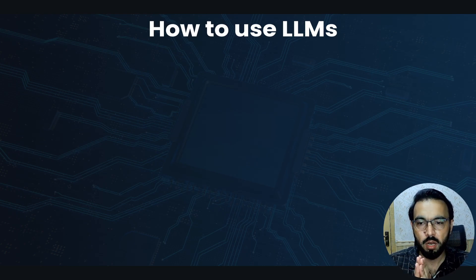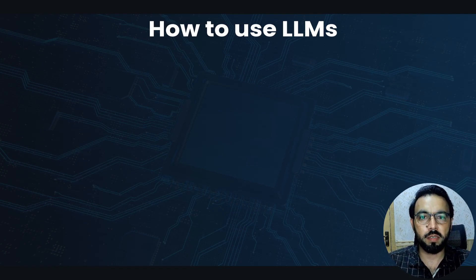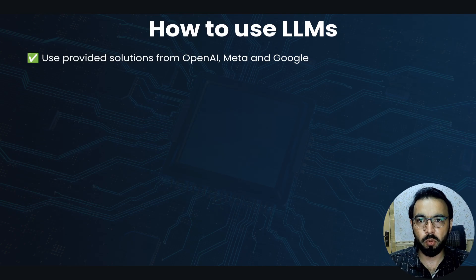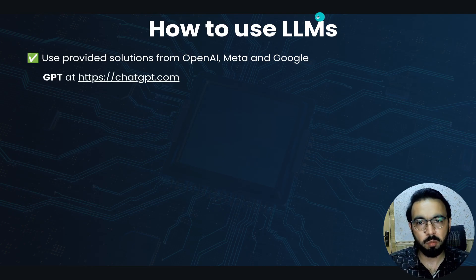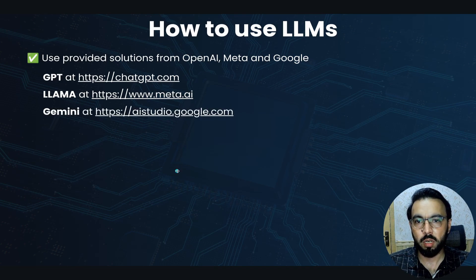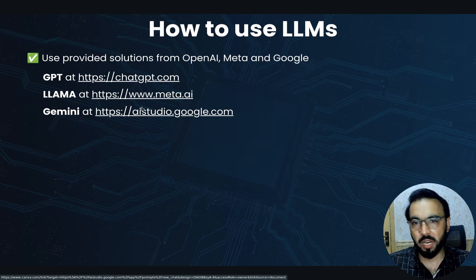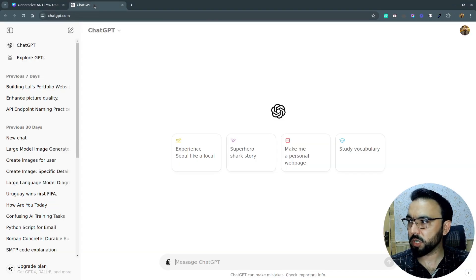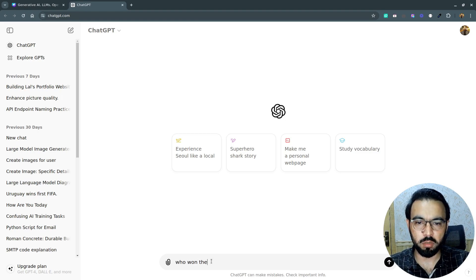We can use these LLMs for personal use via provided solutions or build our own applications on top of these models. From OpenAI we have GPT available on chatgpt.com, from Meta we have Llama, and from Google AI Studio we have Gemini. Clicking on each gives you a ready-made interface where you can start chatting with these models.